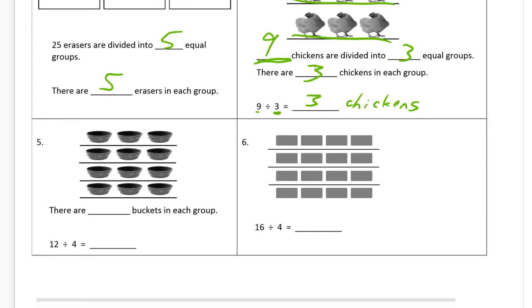And now we're to the bottom of the page, looking at number 5, we're counting buckets. We have, let's see, we have rows and those are our groups. One, two, three, four groups. Each group has three buckets. So there's 12 buckets divided into four different groups is three buckets in each group.